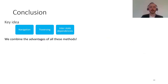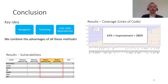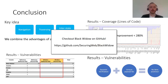To conclude, our key idea is to combine navigation, traversing, and interstate dependencies into one approach. This improves coverage by between 63% and 280% compared to the union of all other scanners across all tested applications. We find more vulnerabilities in reference applications as well as vulnerabilities in modern applications. Due to our combination of dynamic verification and unique payload IDs, we also keep false positives to a minimum. Black Widow is open source and available on GitHub — make sure to check that out. Thank you all for attending, and I look forward to the questions in the Q&A.